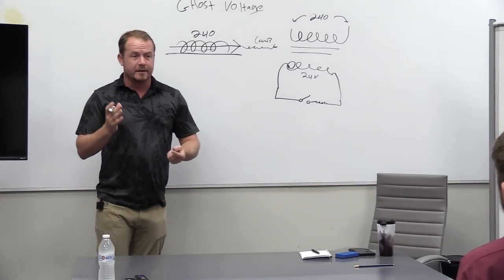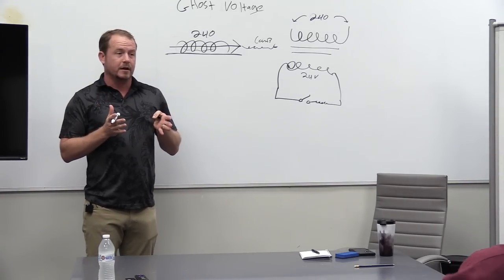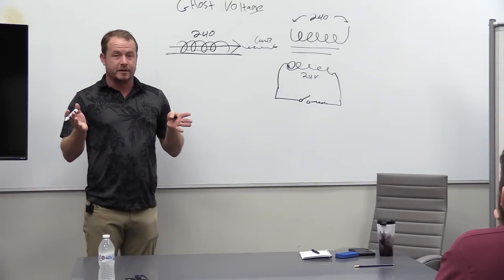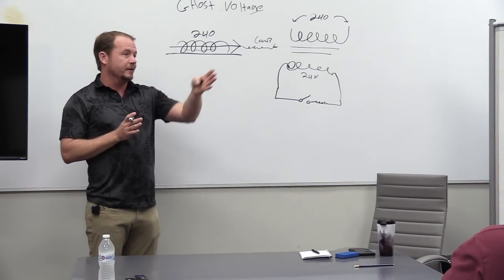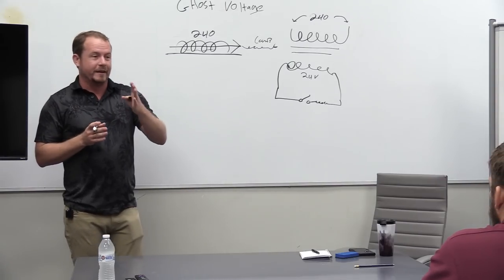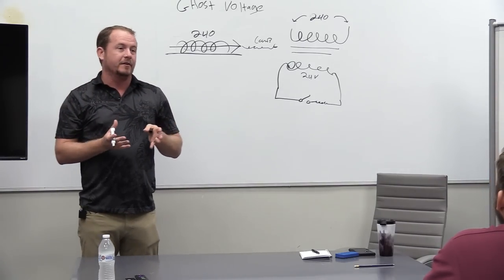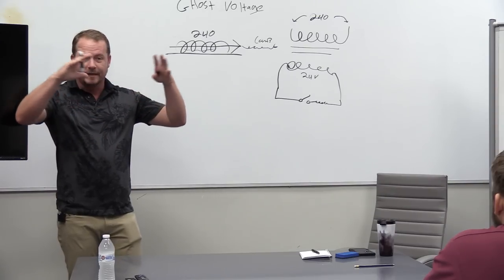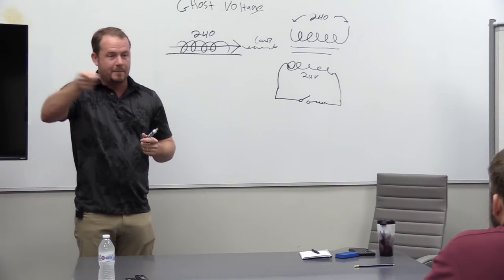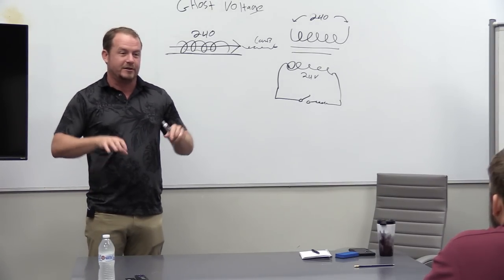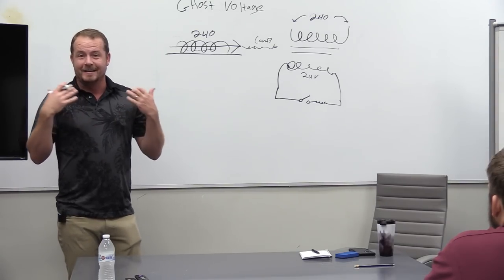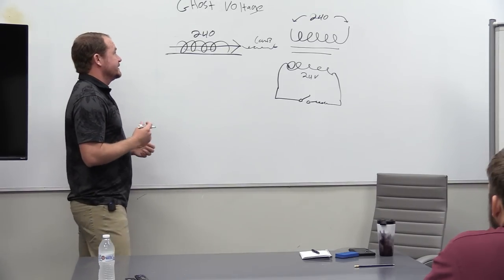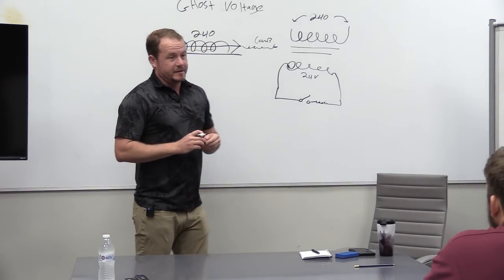One lesson is we don't want to run conductors next to each other, especially high voltage and low voltage conductors, especially control conductors. We don't want to run them through the same hole in the cabinet. When we're running them inside of an assembly, we don't want to lay them next to each other. We don't want to take wires and wrap them back and forth with just a bunch of extra and jam it right next to high voltage, because you're going to get that induction. So one of the sources of ghost voltage is induction.